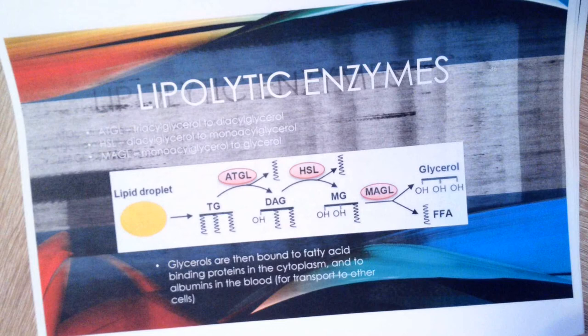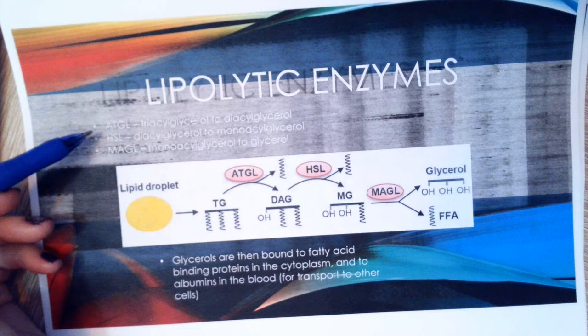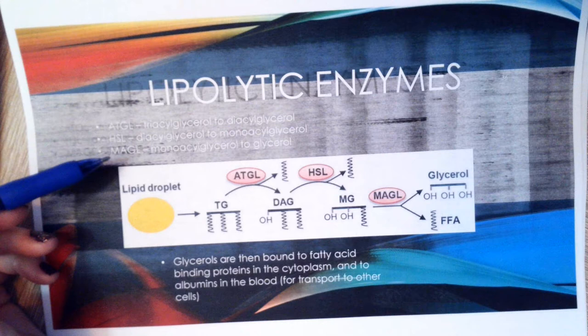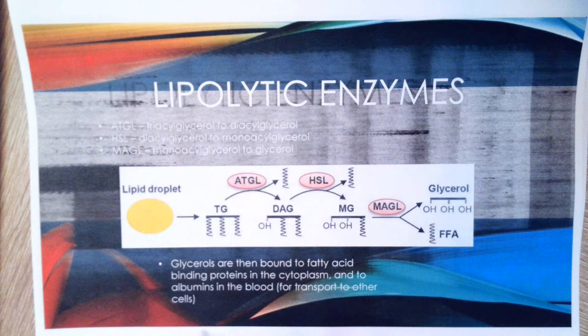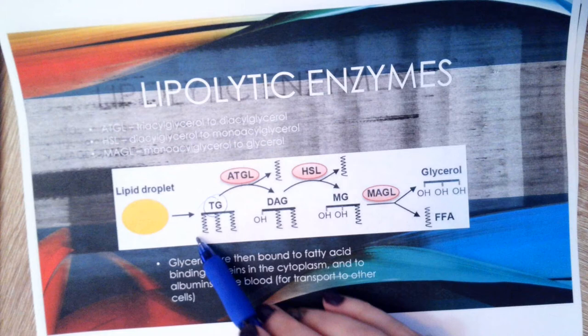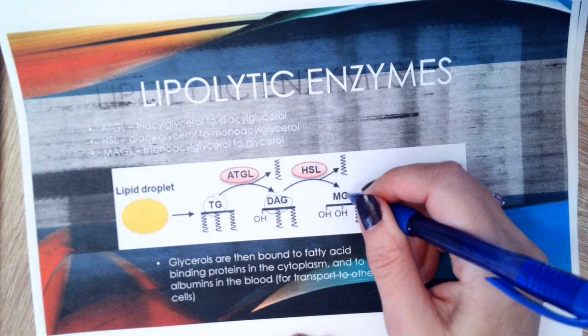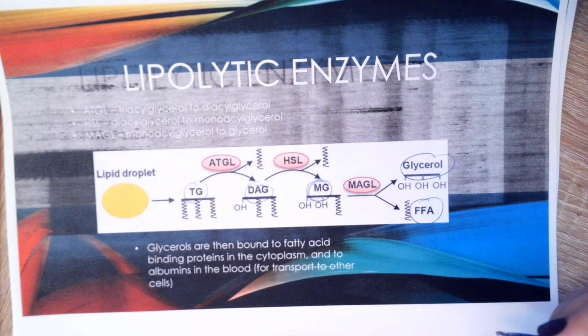The lipases that break down fats are ATGL, HSL, and MAGL, and they act in that sequential order. This is a triglyceride or triacylglyceride — three fatty acid chains. ATGL acts first to give a diglyceride or diacylglycerol with two chains, then HSL gives a monoglyceride or monoacylglycerol with one chain, and finally MAGL gives plain glycerol plus a free fatty acid.